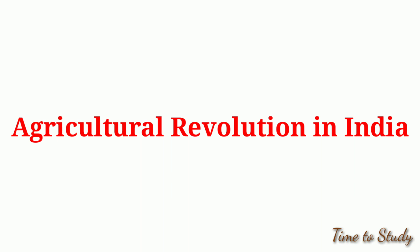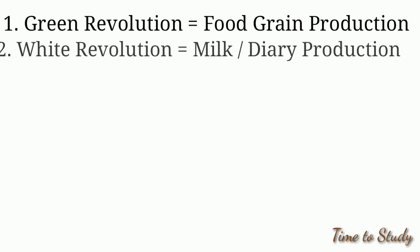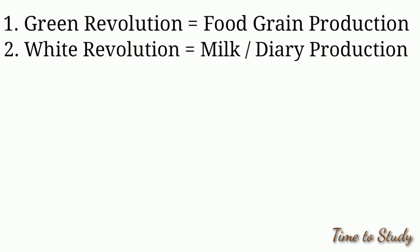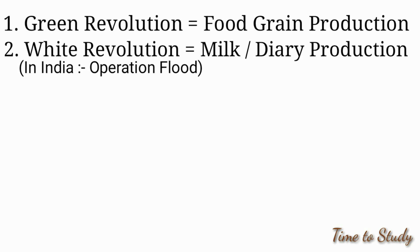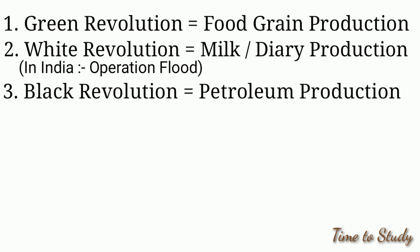Agriculture Revolution in India. Grain revolution is related to food grain production. White revolution is related to milk and dairy production, popularly known in India as Operation Flood. Black revolution is related to petroleum production.